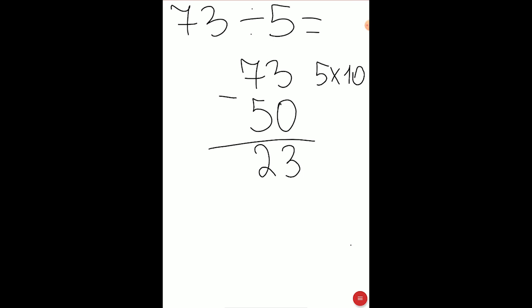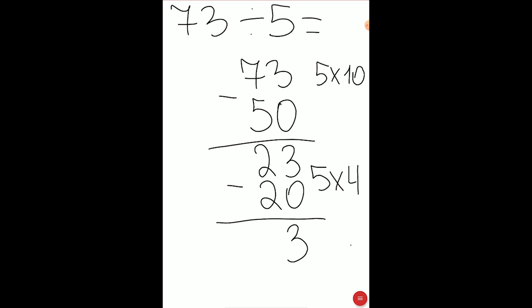Now we need to think: can we divide 23 by 5 exactly? No — we will have a remainder. The closest number to 23 that we can divide by 5 is 20. We write 20 here; 20 we get by multiplying 5 by 4. 23 minus 20 will be 3. We can't divide 3 by 5, so 3 is our remainder. The final step is to add the multiples of 5: 10 and 4.